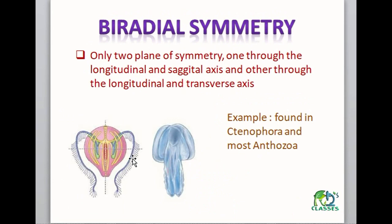Bi-radial symmetry — there is a group normally called Ctenophora, found among Cnidaria. In this group, there are animals whose arms, if we cut radially around their middle axis, give equal halves. And if we also divide them along the longitudinal axis, we again get two equal halves. So in this type of symmetry, both symmetries are present — radial symmetry and bilateral symmetry — and this is called bi-radial symmetry.